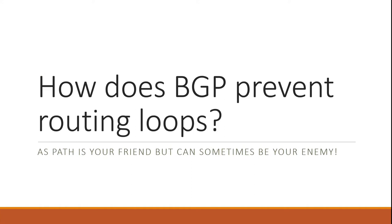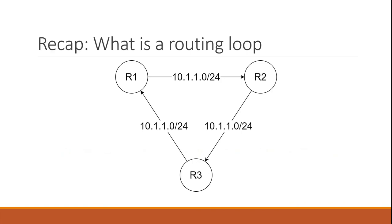One thing to consider with any routing protocol is preventing routing loops. AS path seems like it would provide the means to detect a loop, but it isn't quite enough. A routing loop occurs when R1 knows about a network — say 10.1.1.0/24 — and advertises it to R3, who re-advertises it to R2, who re-advertises it back to R1. The arrows in this picture indicate where each route on each router is pointing — R3 has a route pointing to R1, R2 has a route pointing to R3, and R1 has the route locally but also has a route pointing to R2.